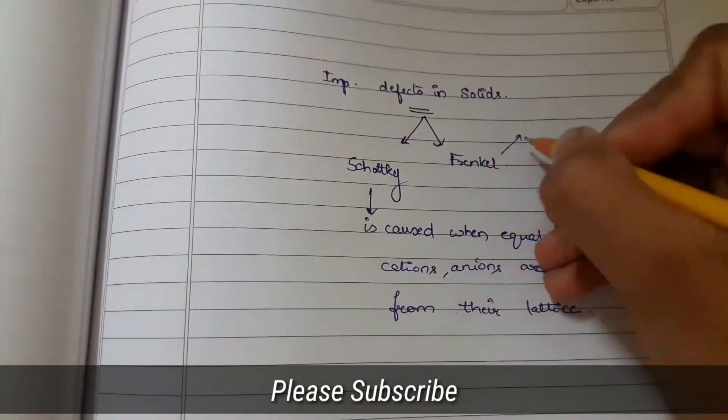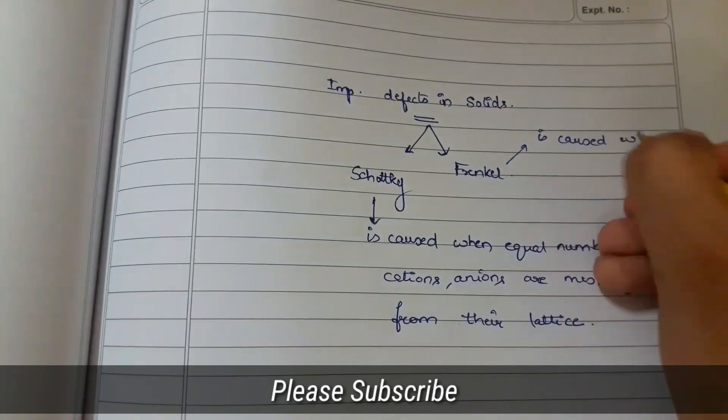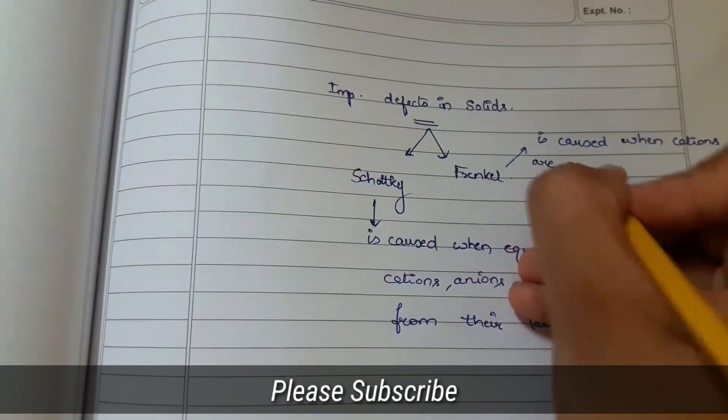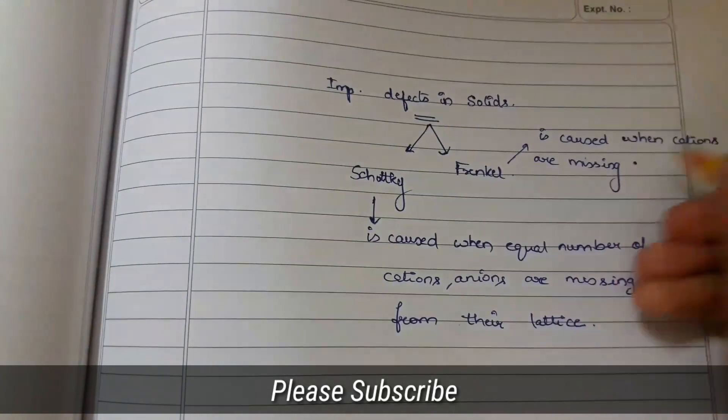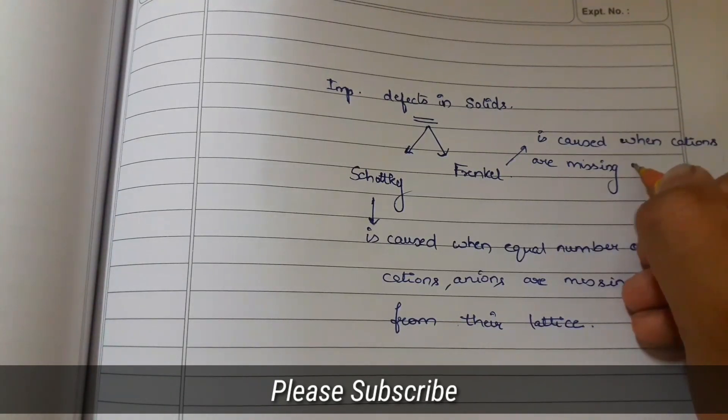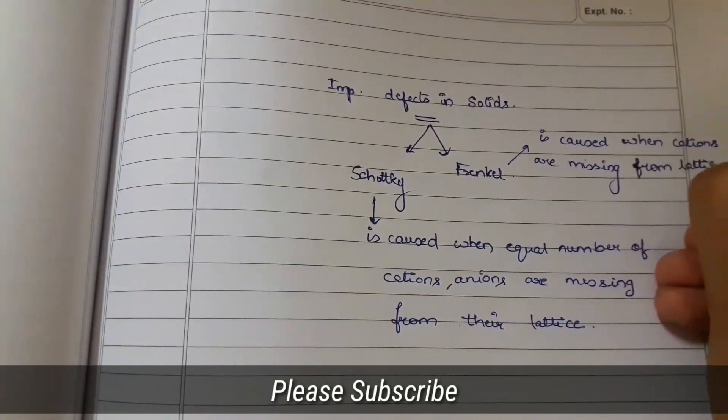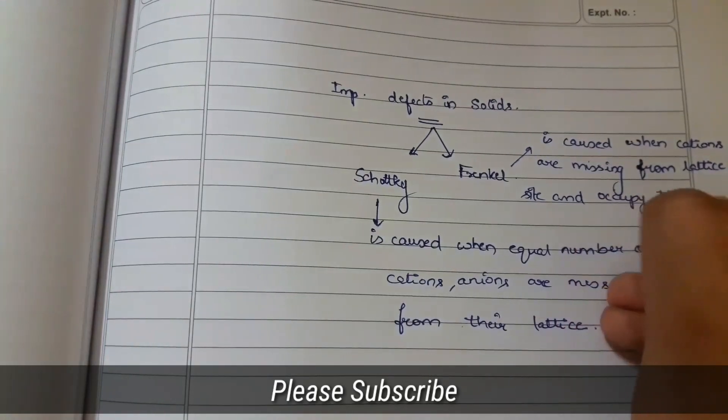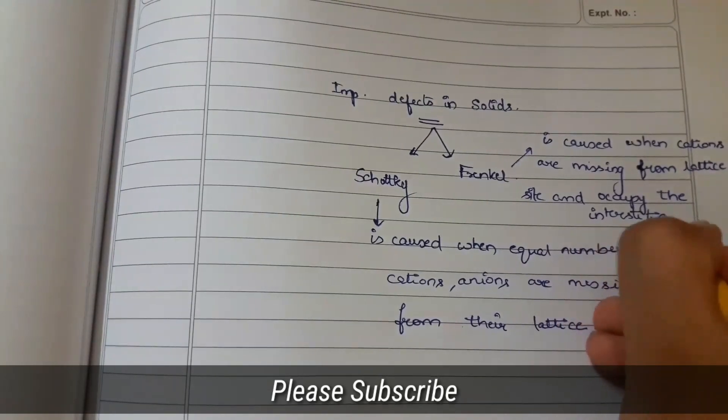What is Frankel Defects? Frankel Defects is caused when cations are missing from the lattice sites and occupy the interstitial sites.